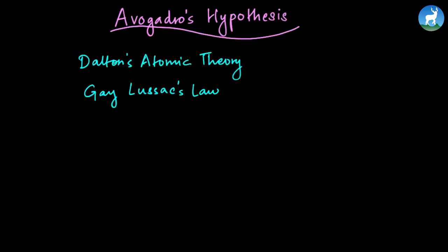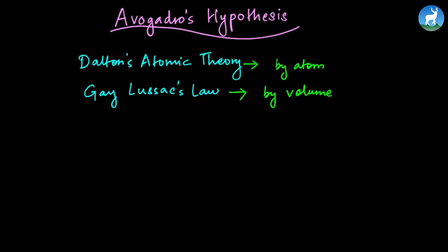We are going to study about Dalton's Atomic Theory and Gay-Lussac's Law. Dalton's Atomic Theory means that elements are in simple whole number ratio by atom. Gay-Lussac's Law means that gases are in simple whole number ratio by volume. Dalton's Atomic Theory means that Gay-Lussac's Law is not going to study any relationship between them.